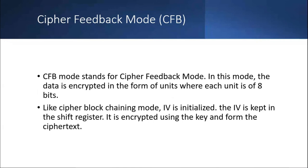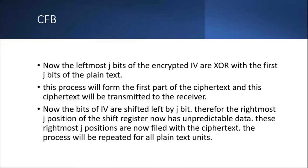Next is Cipher Feedback mode, or CFB. In CFB mode, data is encrypted in units of 8 bits — one byte at a time. Like CBC, an initial vector IV is initialized and kept in a shift register, similar to an LFSR. It is encrypted using the key to produce ciphertext. The leftmost J bits of the encrypted initial vector are XORed with the first J bits of the plaintext, forming the first part of the ciphertext, which is transmitted to the receiver.